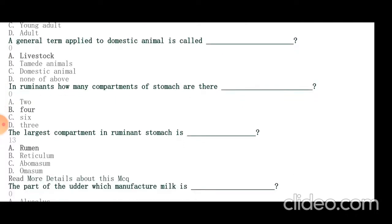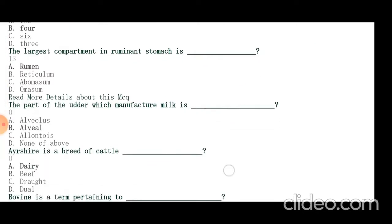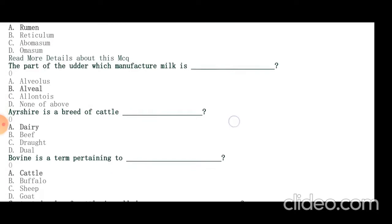The part of the udder which manufactures milk is alveoli. Ayrshire is a dairy breed of cattle. Bovine is the term pertaining to cattle.